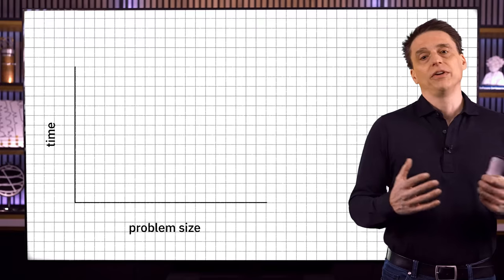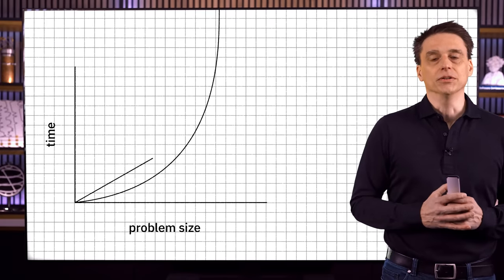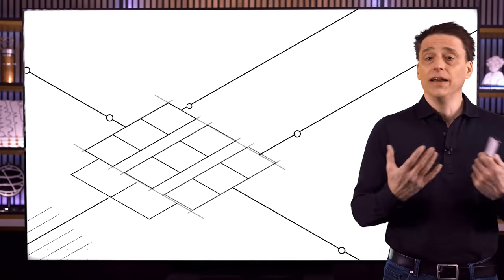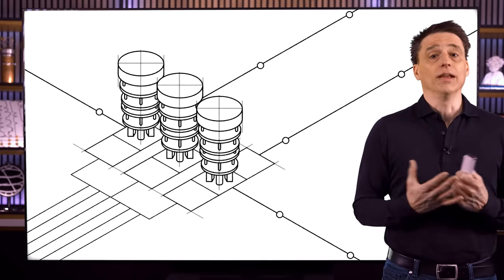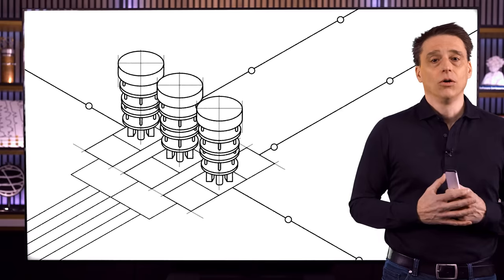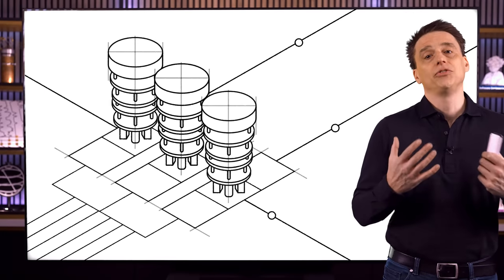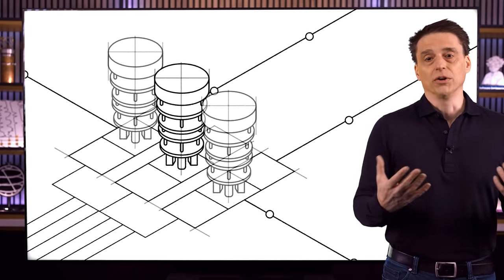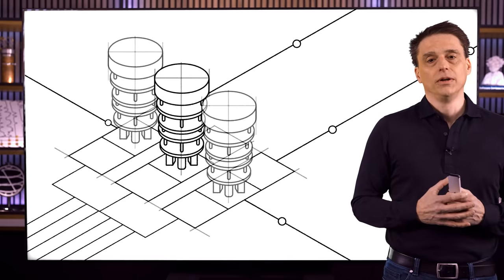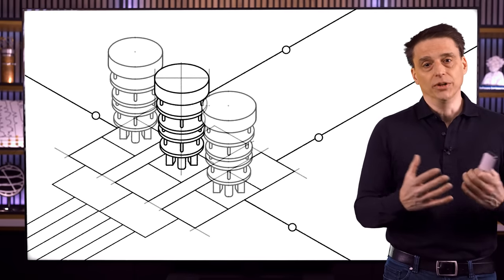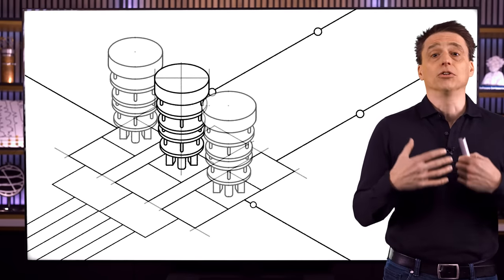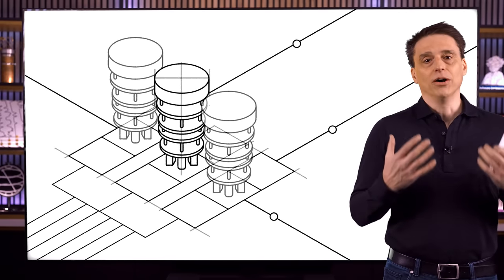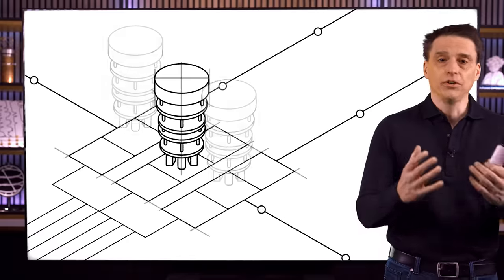In this unit, we'll investigate computational advantages of quantum information — what we can do with quantum computers and the advantages they might potentially have over classical computers. We're going to be focusing on what we can do with a single quantum computer, as opposed to a distributed setting where multiple quantum computers interact over a network. There are quantum advantages to be found in distributed settings where communication and cryptography come into play, but this unit is about quantum algorithms running on single quantum computers.